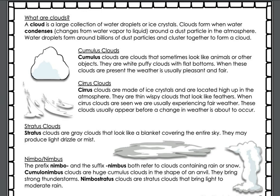What are clouds? A cloud is a large collection of water droplets or ice crystals. Clouds form when water condenses, changes from water vapor to liquid, and forms around a dust particle in the atmosphere. Water droplets form around billions of dust particles and cluster together to form a cloud.